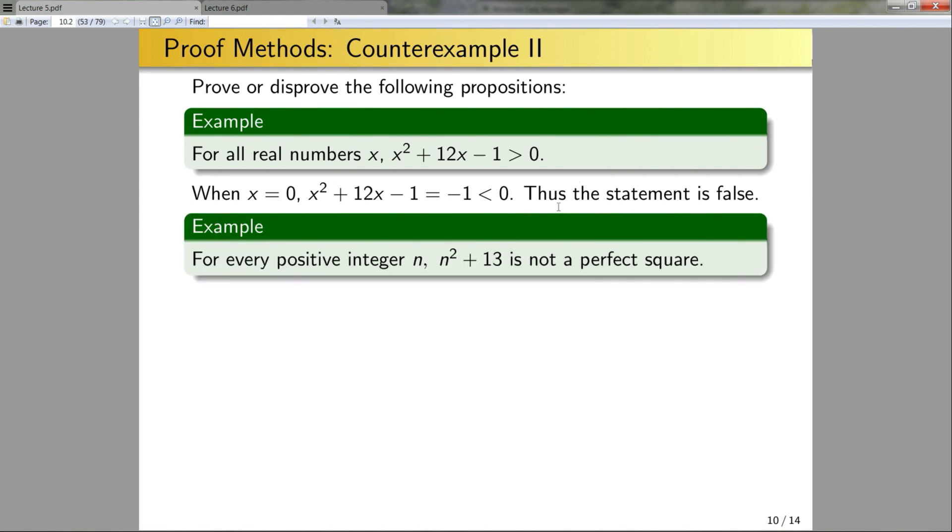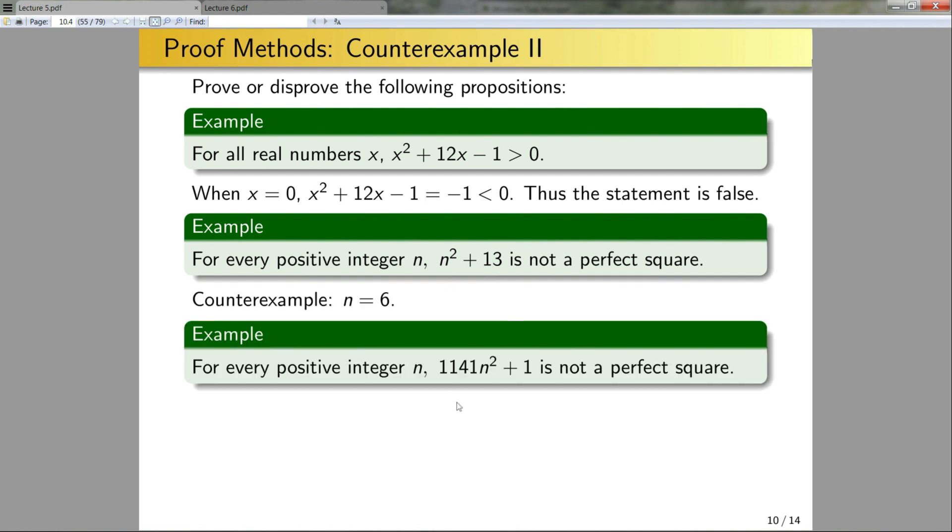Another example, for every positive integer n, n squared plus 13 is not a perfect square. So here I can just plug in various values and see if it's a perfect square. And for instance, six is a counterexample. Or here, prove for every positive integer n that this thing is not a perfect square. Well, I could pick this number as a counterexample. Again, in all three of these cases, there are multiple counterexamples that work. Sometimes that's not the case, but I just picked this large number here to show that there are multiple counterexamples that you can use.